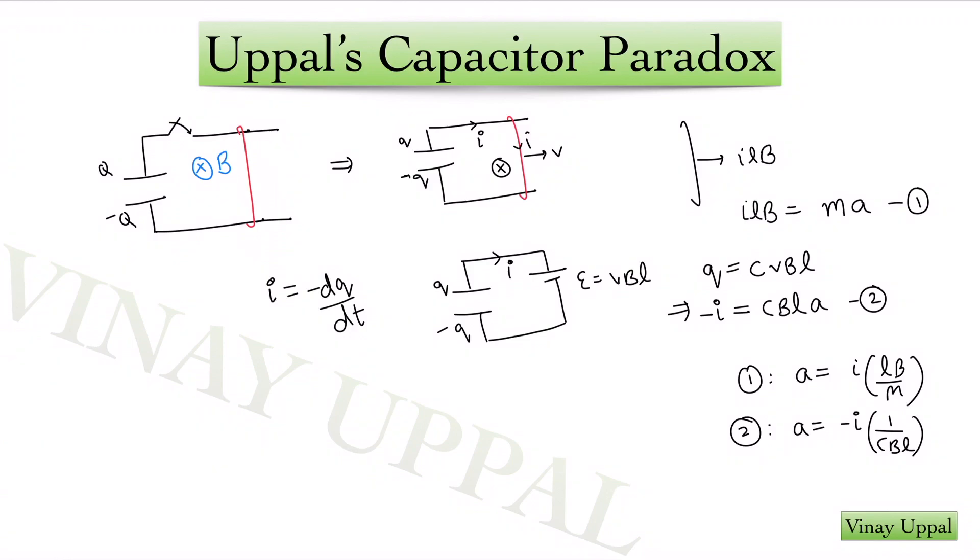The paradox goes like this. You had a capacitor charged with charge capital Q, connected to smooth railings. And in the presence of a uniform magnetic field, you had a movable rod. And the resistance overall of the circuit, of the rod, of the railings and of the wires was all negligible.